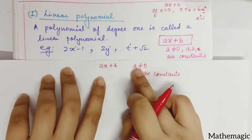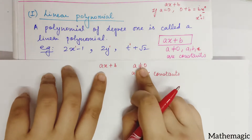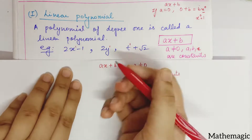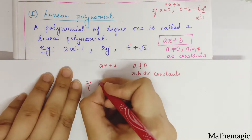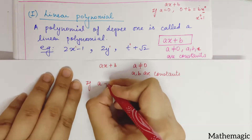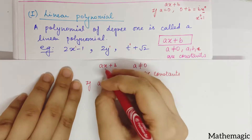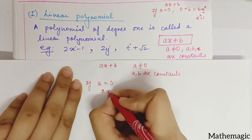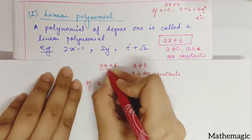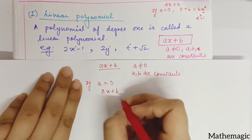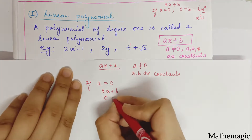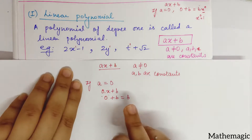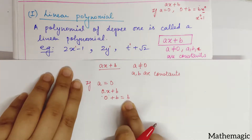Now, a can never be zero — why is this written? Because if we take a as zero, suppose we substitute a = 0 into a linear polynomial, it becomes zero times x plus b. Zero into x is zero, so we are left with just b.